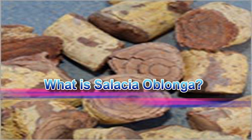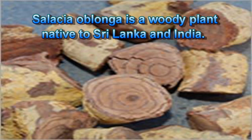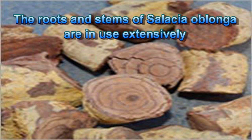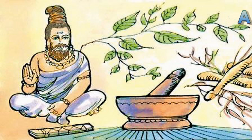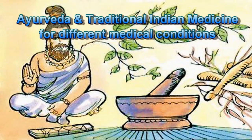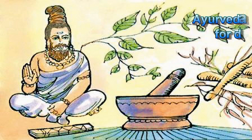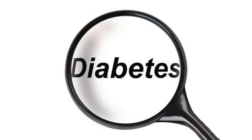What is Salatia oblonga? Salatia oblonga is a woody plant native to Sri Lanka and India. The roots and stems of Salatia oblonga are used extensively in Ayurveda and traditional Indian medicine for different medical conditions, including diabetes.